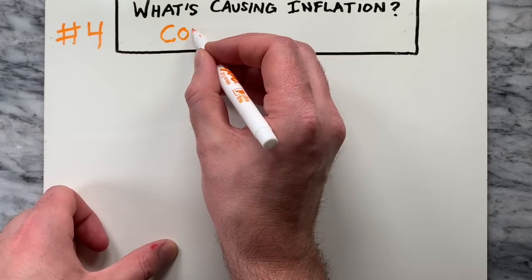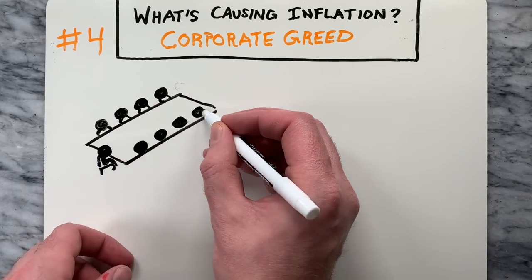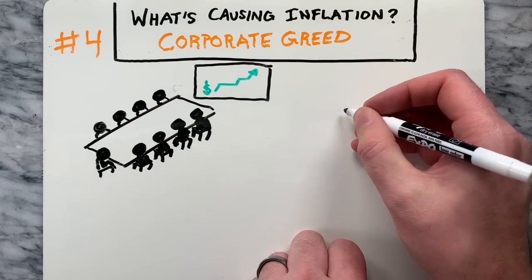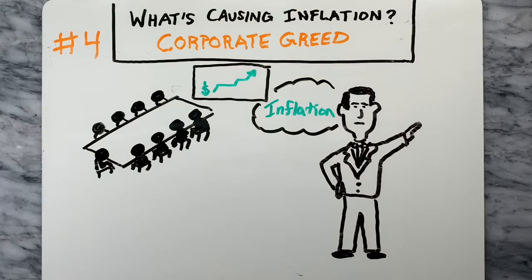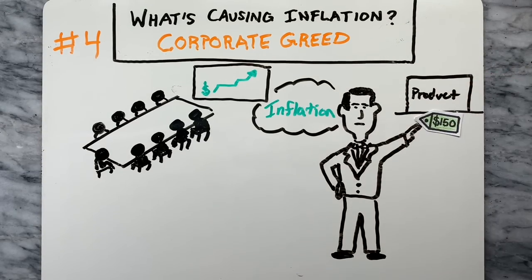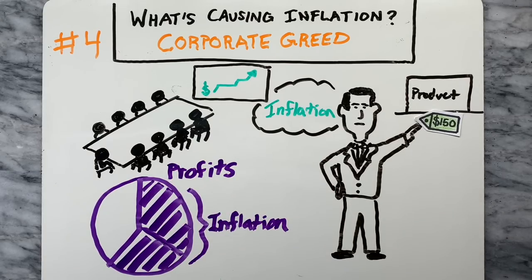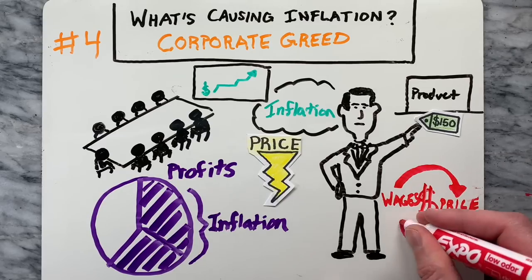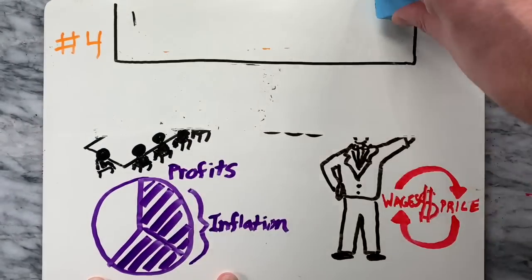Reason number four has some people blaming corporations for consolidation and price setting. They say that companies are using their power to set prices at whatever they like because of the lack of competition. They also say that companies are boosting inflation higher by using the problem as an excuse to increase prices so that they can make more profits. A study found that two-thirds of corporate profits are due to inflation increases, and corporations do have the power to change prices and create inflation. Lastly, some economists are blaming the cycle of rising wages and rising prices as a self-perpetuating cycle.